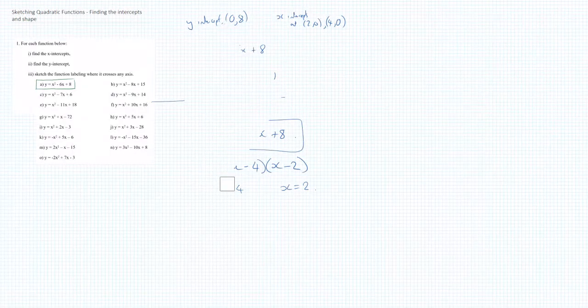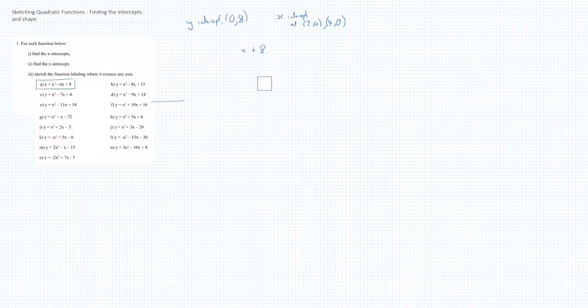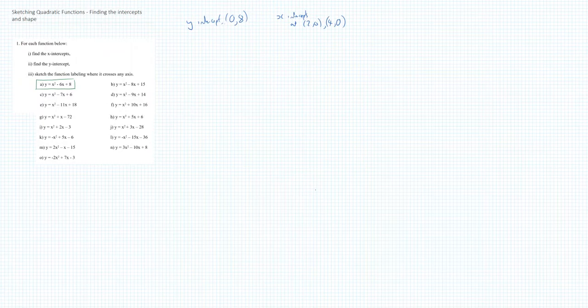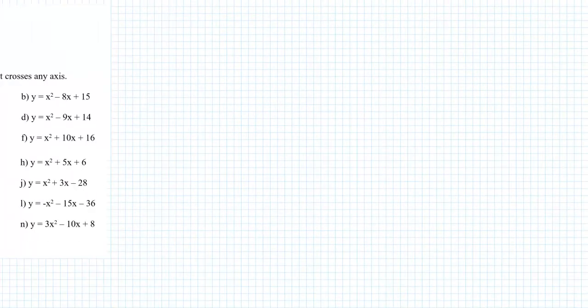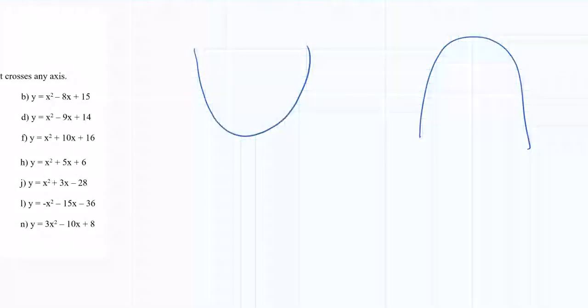Finally, we're going to do a little sketch. But before we do that, we'll just think about the shape for a second. Quadratics are one of two situations. They're either smiley faces or they are sad faces. And that is the only way that it can be. We need to just think about which one of those it's going to be.